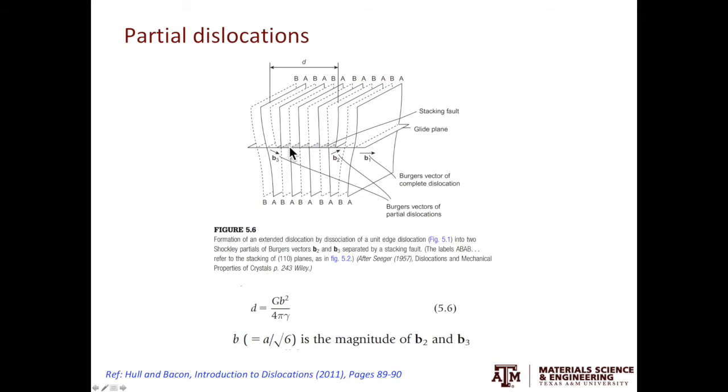Taking a step further, by looking at the dissociation distance of the partials, we can calculate the stacking fault energy. The relationship of the partial dissociation distance and the stacking fault energy is given here, where G is the shear modulus, B is the Burgers vector of the partial, gamma is the stacking fault energy, and D is the dissociation distance at equilibrium.